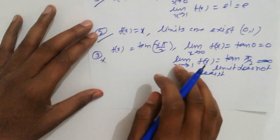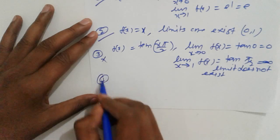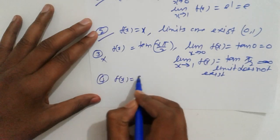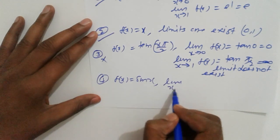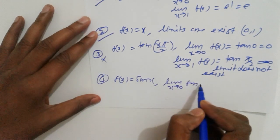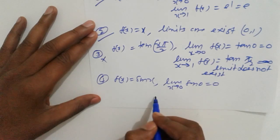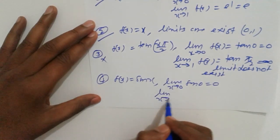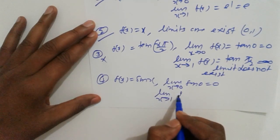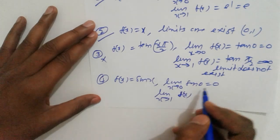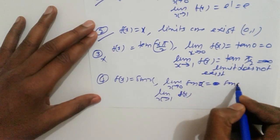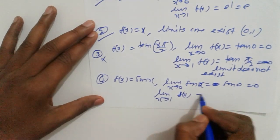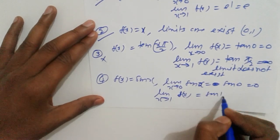The limit does not exist, so the third option is wrong. Let's go to the fourth option: f(x) = sin(x). Check the limits. Limit as x tends to 0: sin(0) = 0. Limit as x tends to 1: f(x) = sin(1).